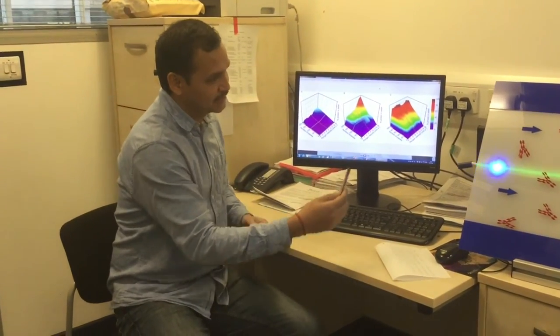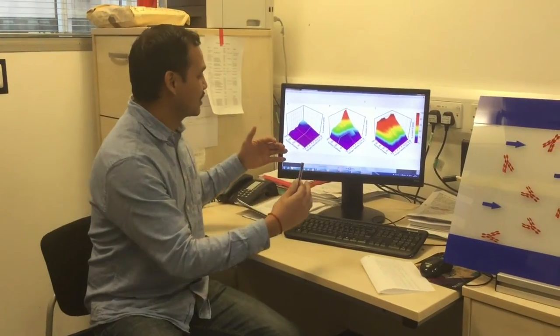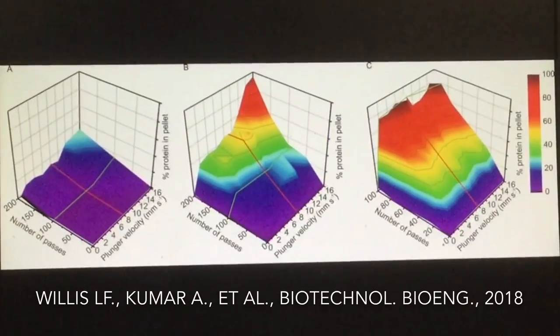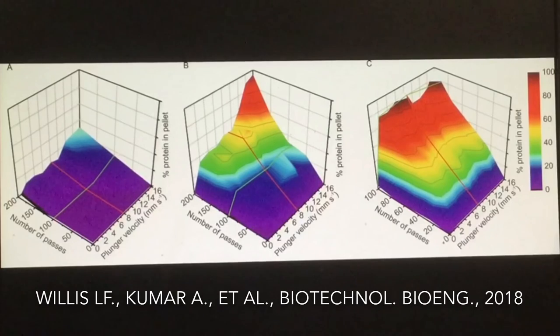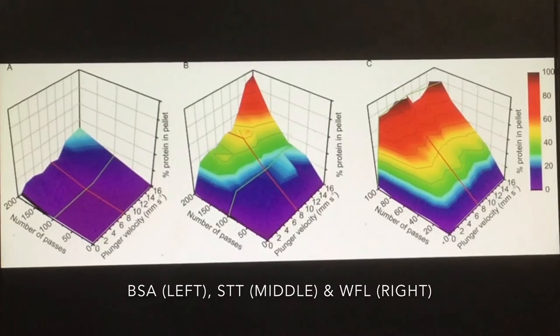So in this study, we tested our three different proteins: BSA and two antibodies under the extensional flow. So basically these are the representation of the 3D plot or 3D surfaces, the number of pass plunger velocity versus the protein aggregation. So you can see BSA requires some sort of threshold to unfold and followed by aggregation.